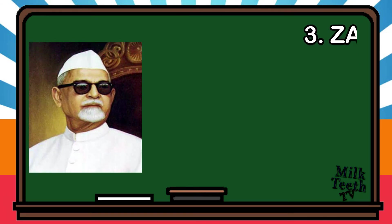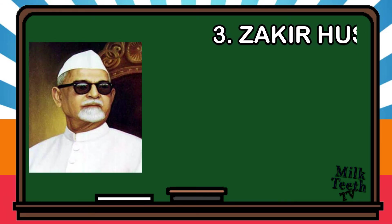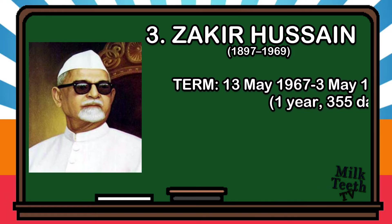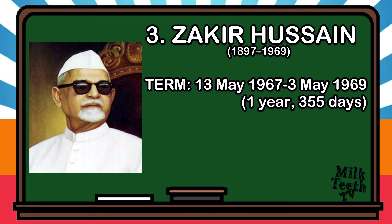Third President of India: Zakir Hussain. Born in 1897, his term began on 13th May 1967 and lasted up to 3rd May 1969, for a period of one year and 355 days.